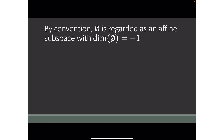By convention, the empty set is regarded as an affine subspace with dimension equal to negative one. This is because the translation of the zero subspace consists only of the zero vector, so a single point has dimension zero, and the empty set is assigned one dimension less — that is, negative one.